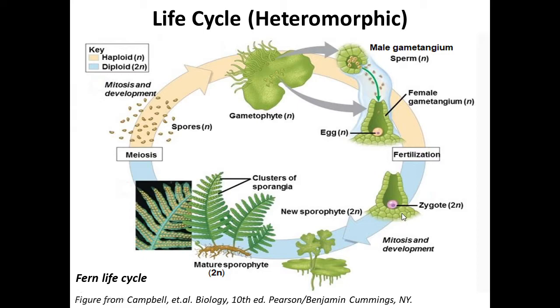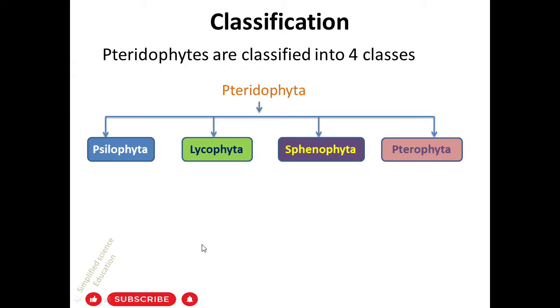Mucilaginous secretions present in the neck of the archegonia attract antherozoids. On fertilization, a diploid zygote develops, which develops into a new sporophyte, and this cycle continues.